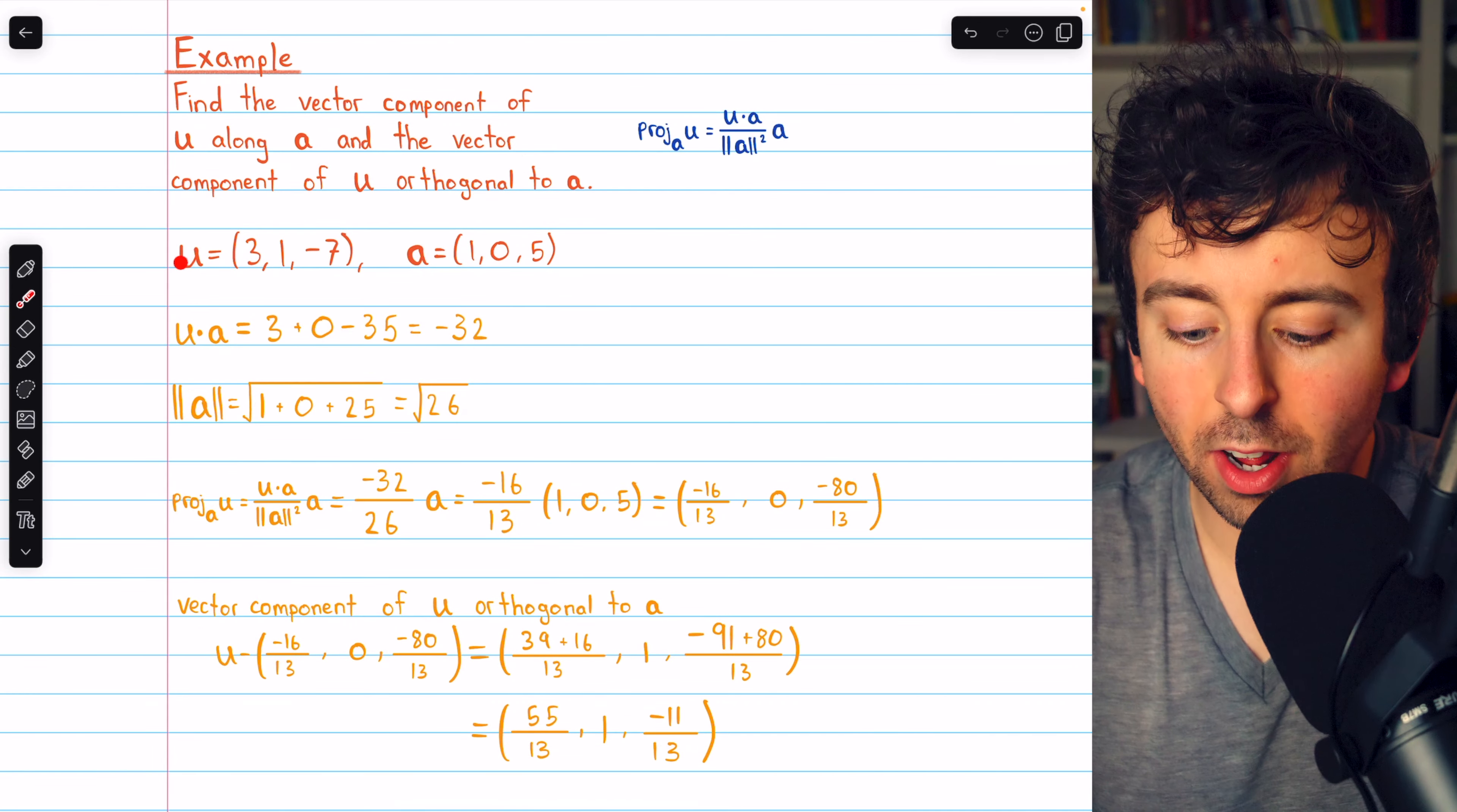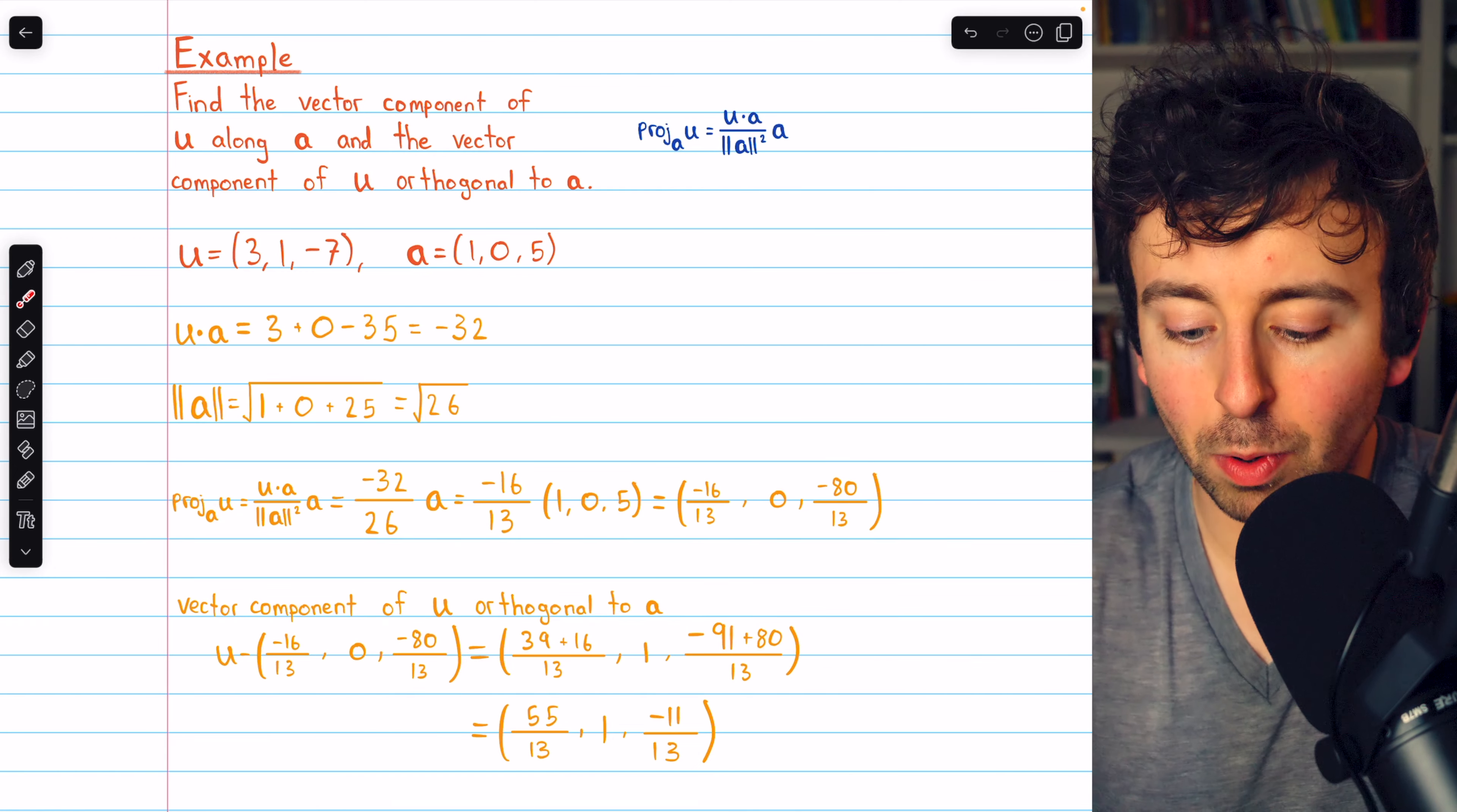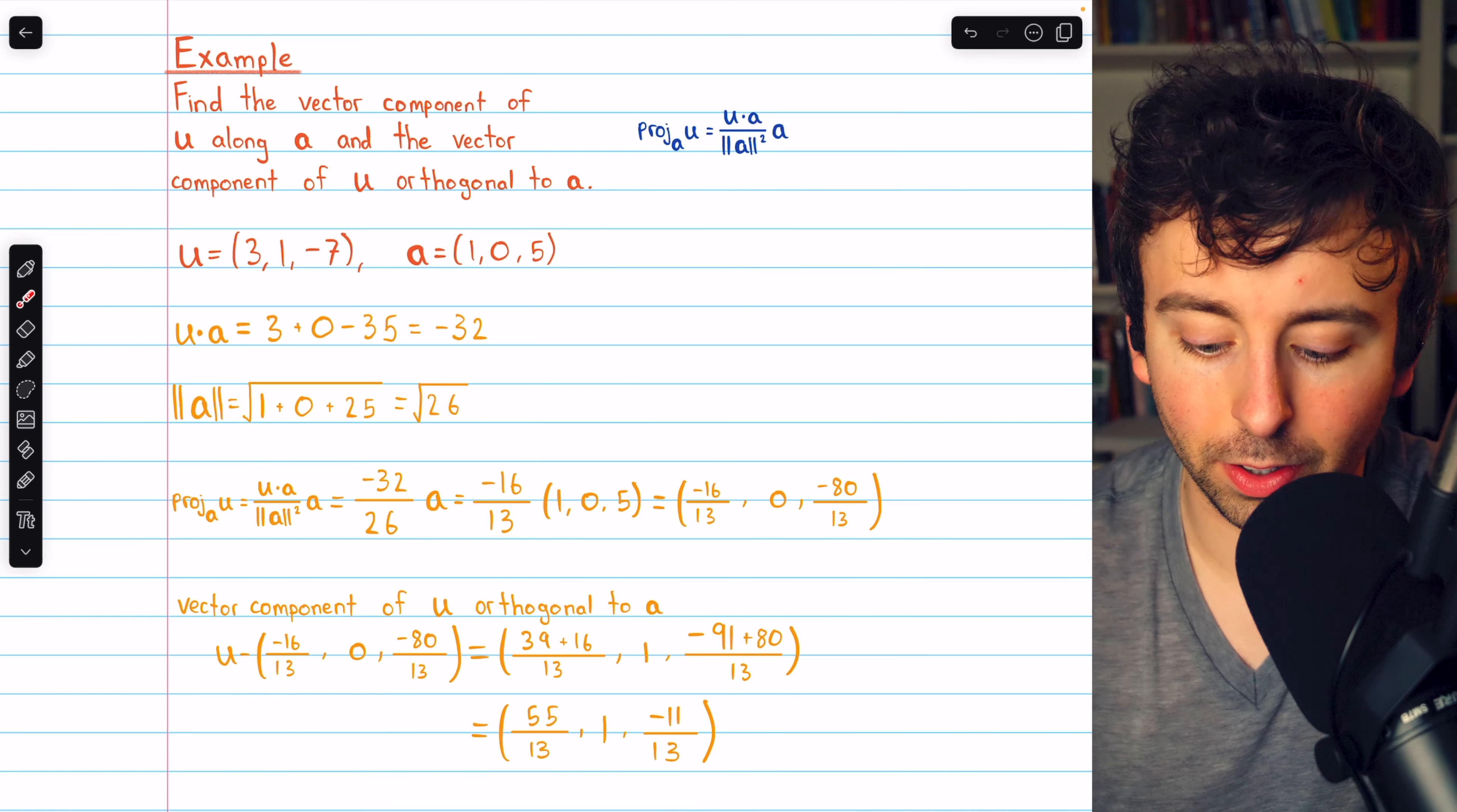But of course, u is not parallel to a, so we can't just write it as a scalar multiple of a, but we can write it as a linear combination of a scalar multiple of a and a vector orthogonal to a. So now let's write the vector component of u that is orthogonal to a. To find that, we just take u and subtract the vector we just found.